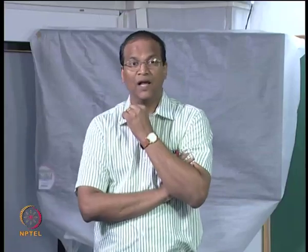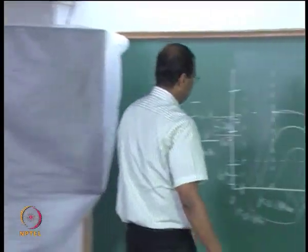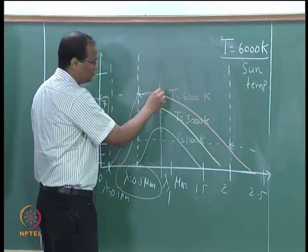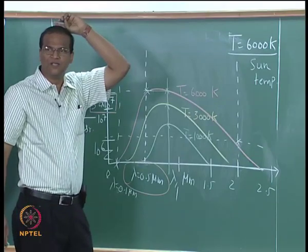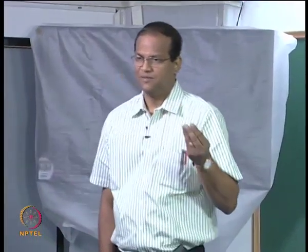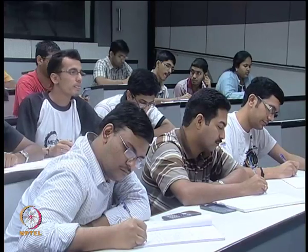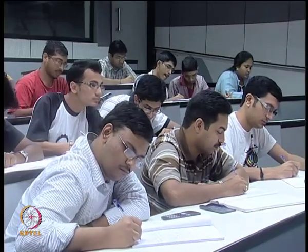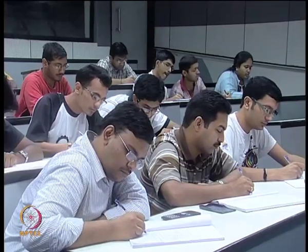Point number 3: for a given lambda, i_b_lambda increases with temperature. You take any lambda — i_b_lambda for 1000 Kelvin is here, i_b_lambda for 3000 Kelvin is here. This is also intuitively apparent from the second law of thermodynamics: the higher the temperature, the higher will be i_b_lambda. Point number 4: the peak of i_b_lambda keeps shifting to the left — that is, the peak shifts to lower wavelengths for increasing temperatures.